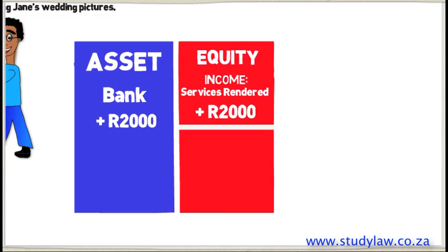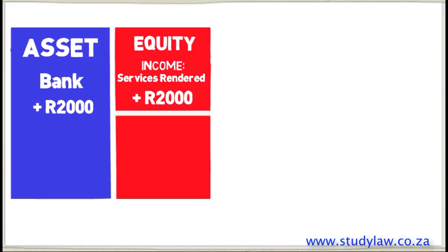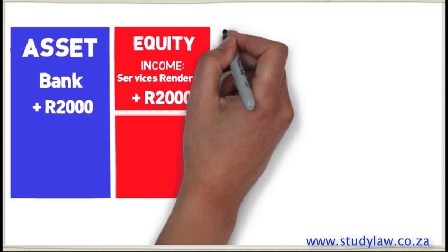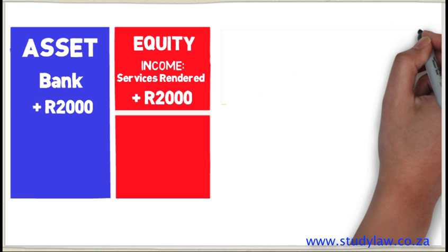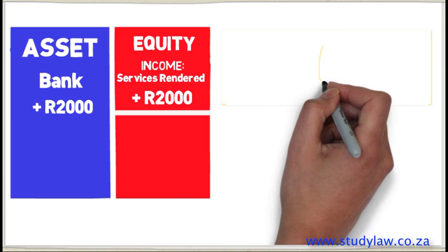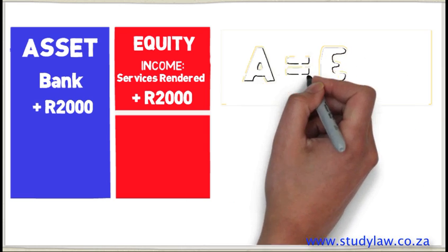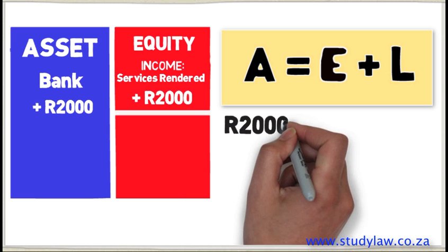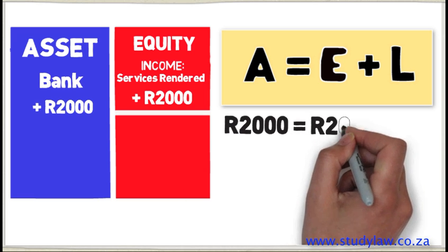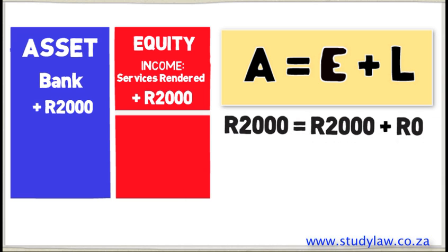We can see that both sides are equal to one another. Using the accounting equation — Assets equals Equity plus Liabilities — R2,000 is equal to R2,000 plus zero. Therefore, our equation balances.